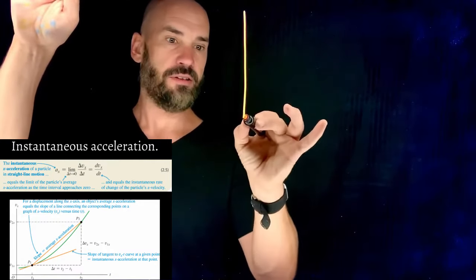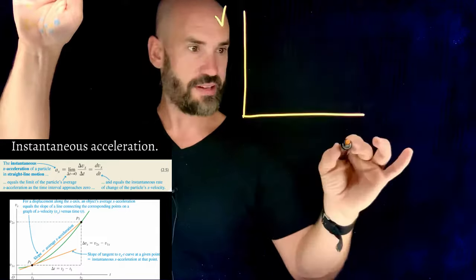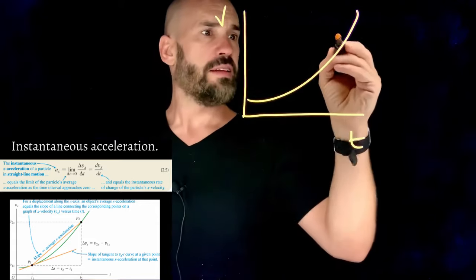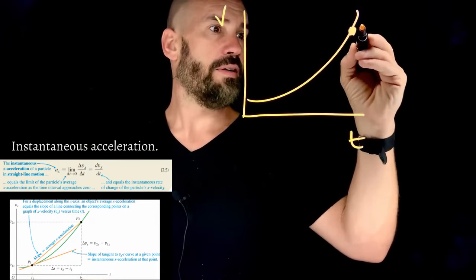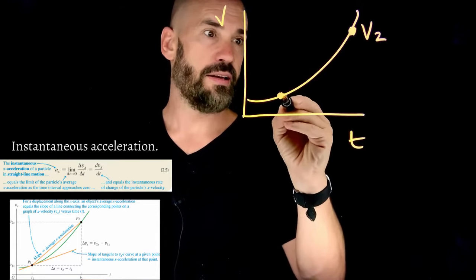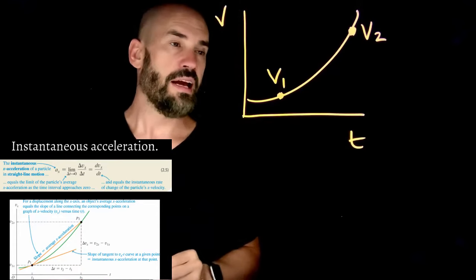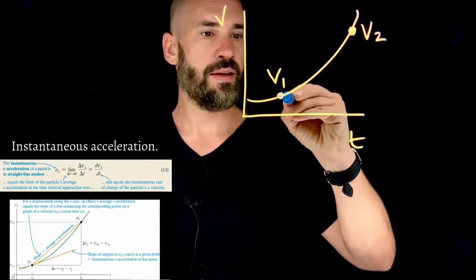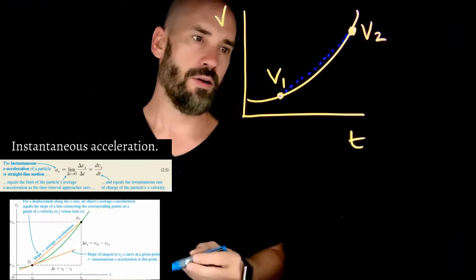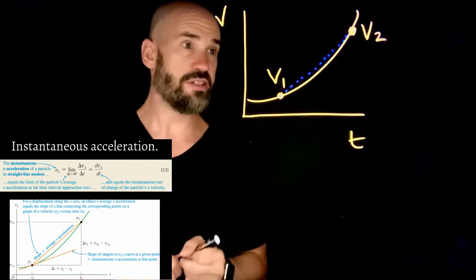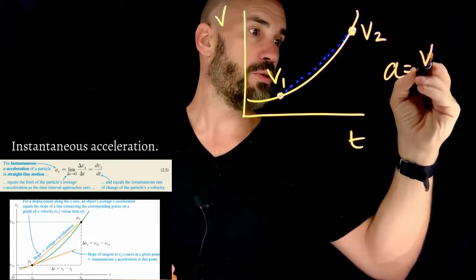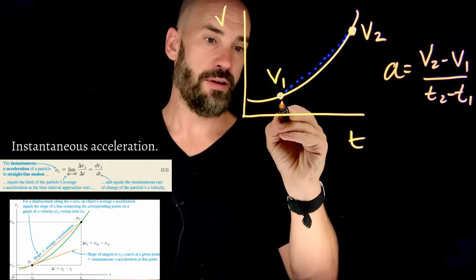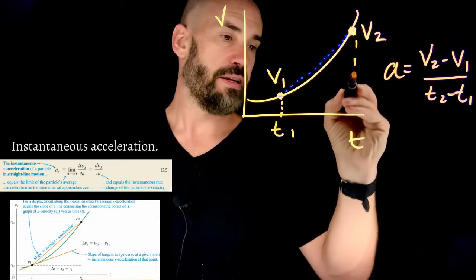Newton invented calculus partly to deal with continuously changing curves and continuously changing lines so that you could find not just the average velocity and average acceleration, but actually instantaneous at a specific point. So what do I mean by that? Well, let's have a little graph. Let's say this is velocity versus time, and let's say that my curve looks something like this. So let's say this point here is V2, and this point here is V1.